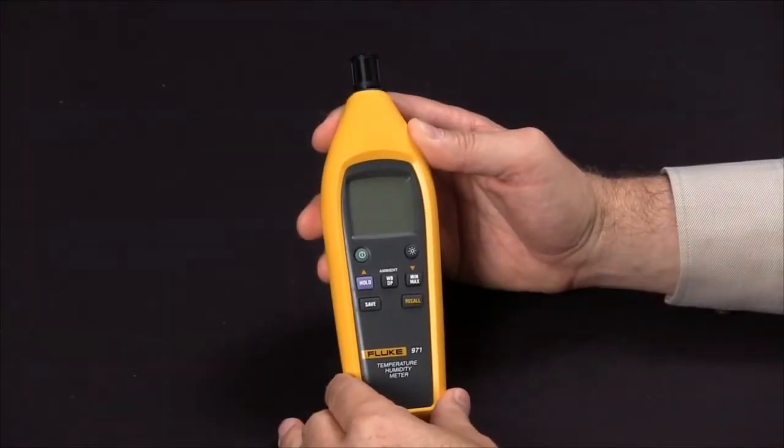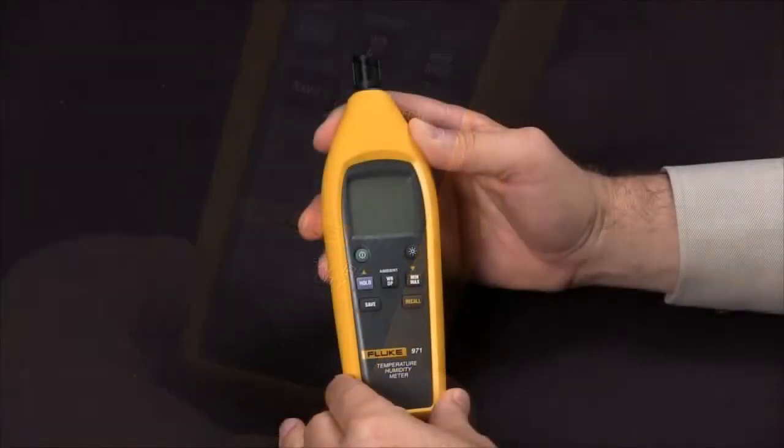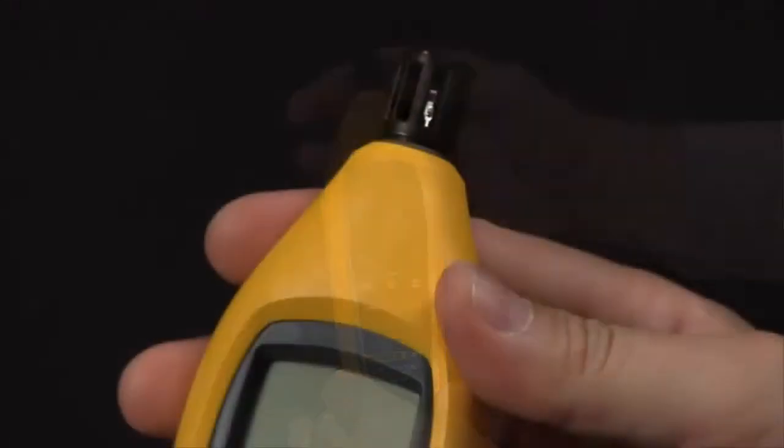Today, we are here to discuss the key features of the Fluke 971 Temperature and Humidity Meter. To begin your readings, simply twist the port on the top to expose the sensor.